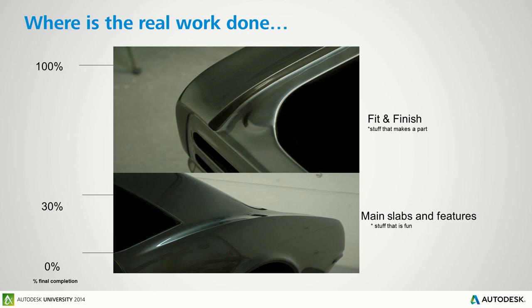The real work of a Class A modeler is getting down in the trench and doing all this detailed flange and joint work. Not a lot of people are required to do this. I think it's actually easier to make those big body panels — the flange work is the much tougher work, and that's what really makes you a good Class A modeler if you can do that kind of work.